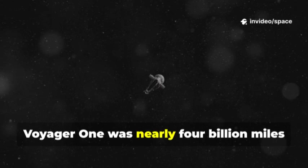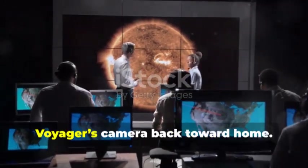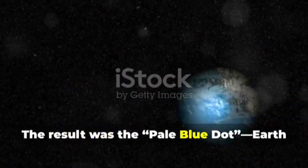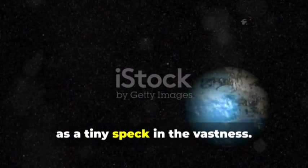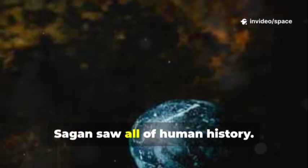By 1990, Voyager 1 was nearly 4 billion miles from Earth. Carl Sagan had a final request: turn Voyager's camera back toward home. The result was the pale blue dot, Earth, as a tiny speck in the vastness. In that single pixel, Sagan saw all of human history.